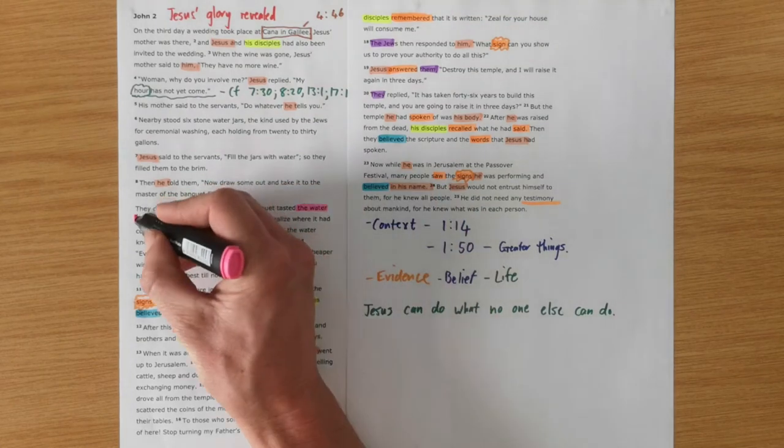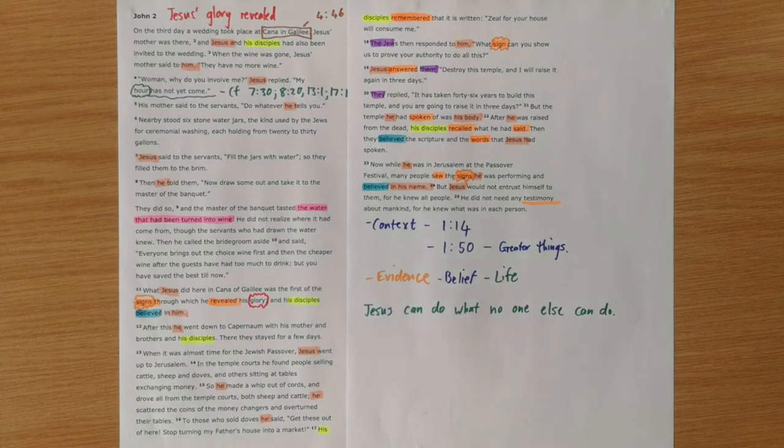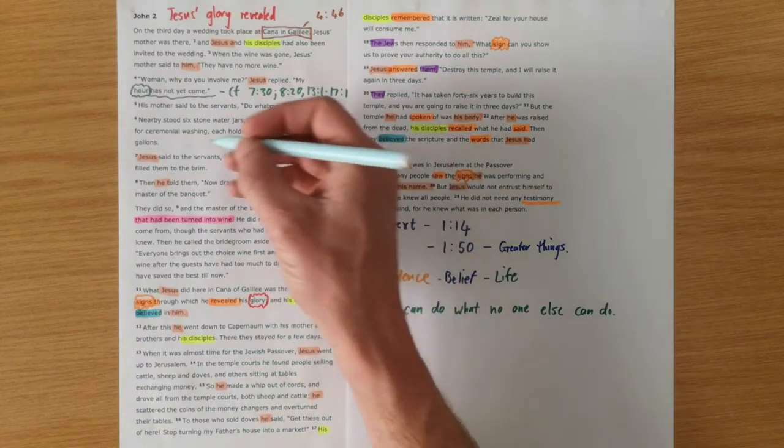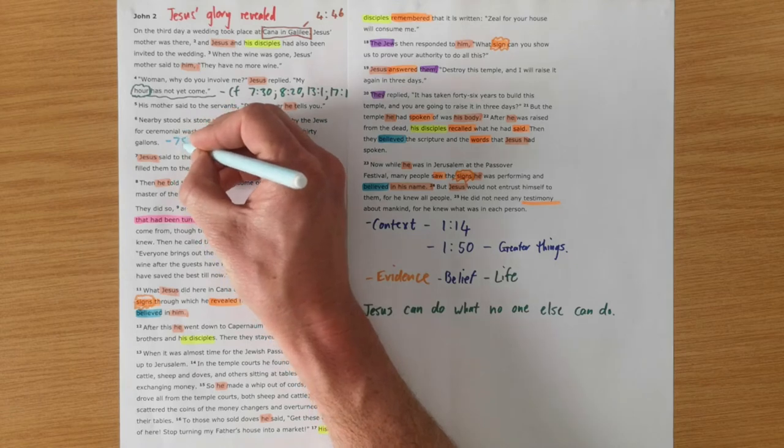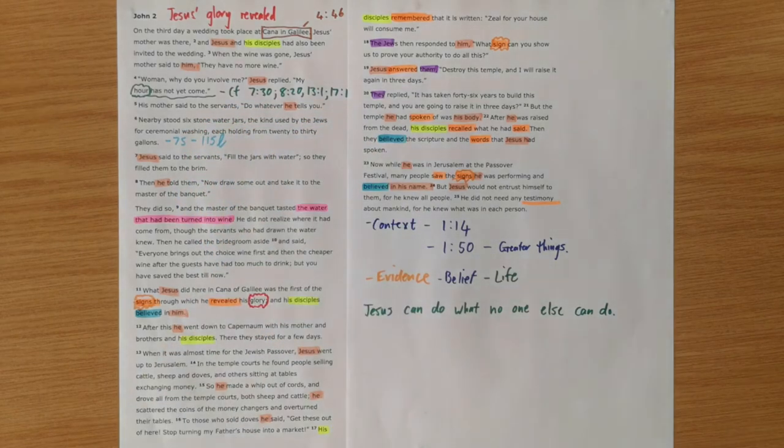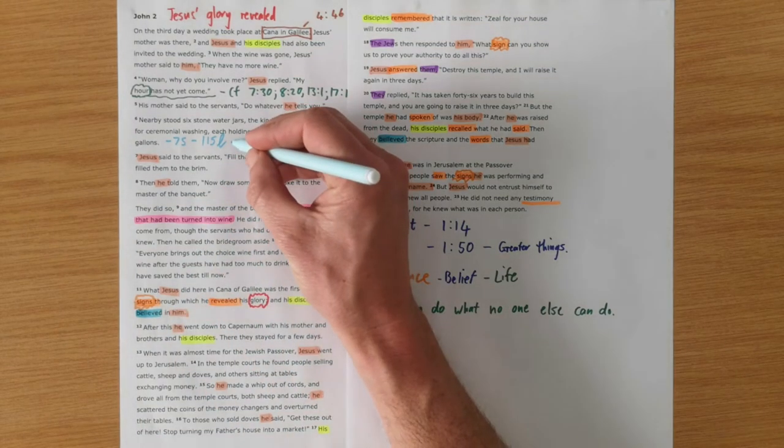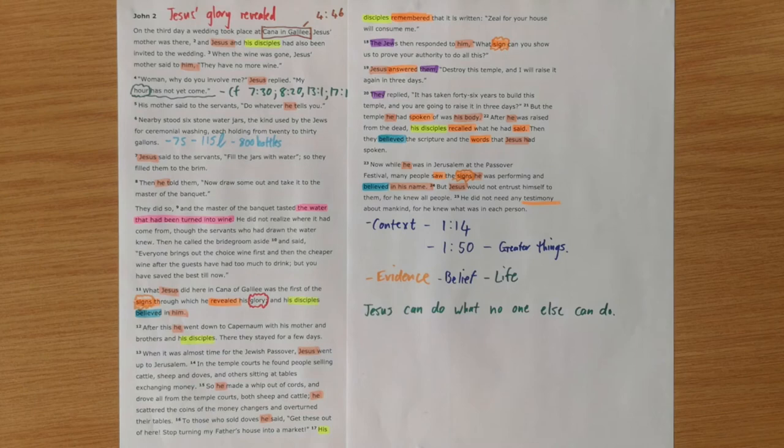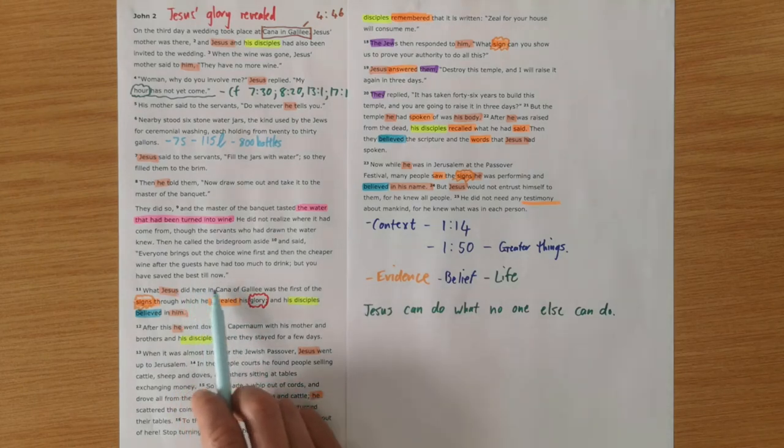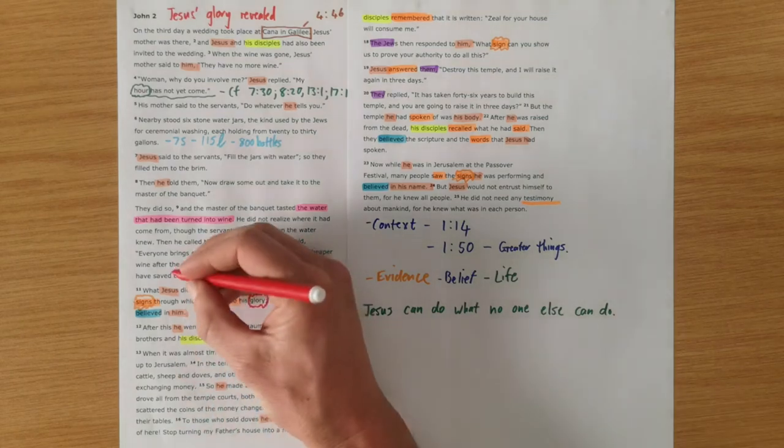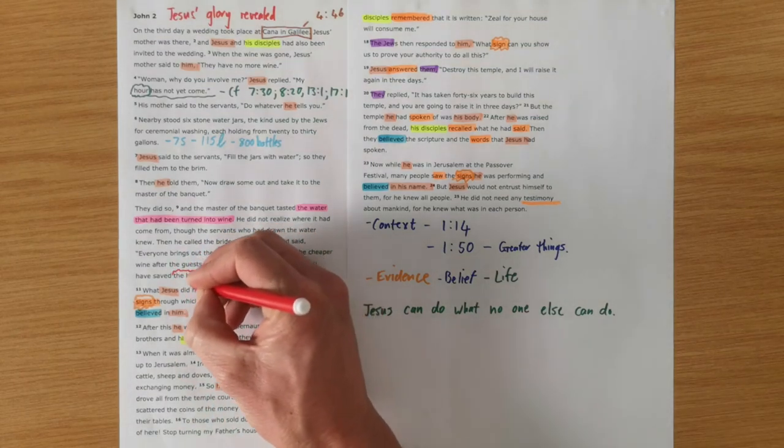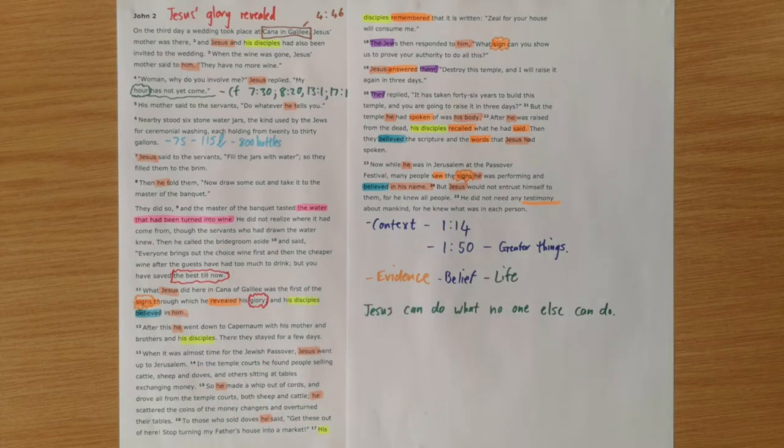And this amazing sign that Jesus does in these first few verses, or in these first section, is that He turns the water into wine. The water had been turned into wine. Now we can miss the amazingness of what's actually happening here, because we're familiar with this story. But it is an absolutely astounding thing that Jesus does here. There's 20 to 30 gallons. So in our terms, it's 75 to 115 liters each day. It's 800 odd bottles of wine.